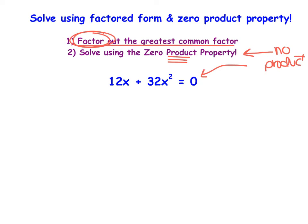We're going to look at 12x² and 32x and factor out the greatest common factor. When I look at 12 and 32, I notice that their greatest common numerical factor is 4. I also notice that they both contain at least one x — x to the first, at least that. So I'm going to factor that out in front.